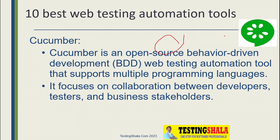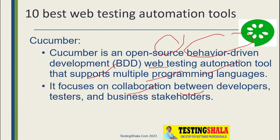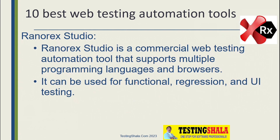The next type of automation tool is Cucumber. Cucumber is another open source tool — basically this tool is more of a behavior-driven development (BDD) framework. It supports multiple programming languages and its main focus is on collaboration. Especially if you are working in Agile, this tool will be very useful where you can easily collaborate across developers, testers, and business stakeholders.